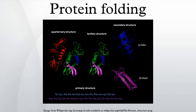The amino acid sequence of a protein determines its native conformation. A protein molecule folds spontaneously during or after biosynthesis. While these macromolecules may be regarded as folding themselves, the process also depends on the solvent, the concentration of salts, the pH, the temperature, and the possible presence of cofactors and molecular chaperones.